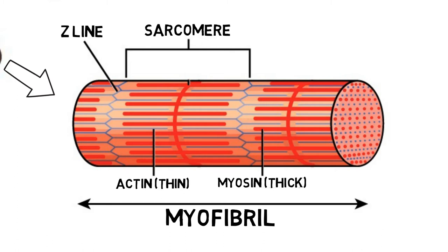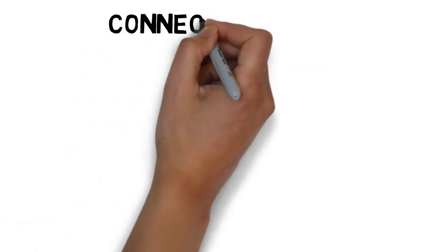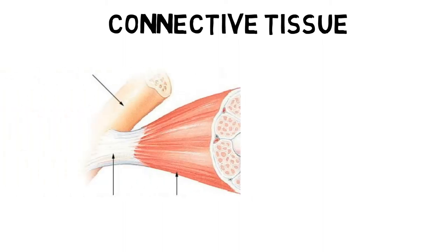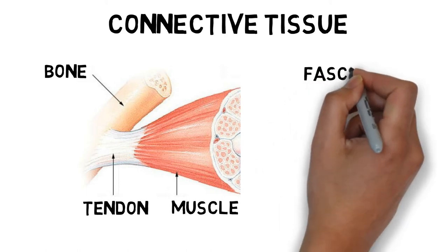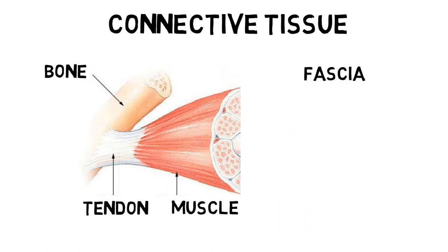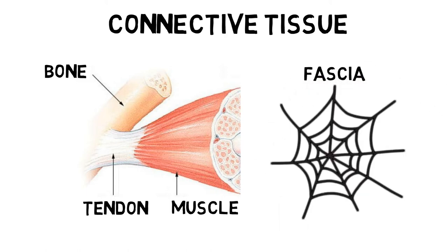The sliding filament theory deserves its own video — you can click on the link below to take a look. Connective tissues allow muscles to interact with the rest of the body. Muscles attach to bones via tendons to provide an anchor for muscles to produce force. Fascia are large areas of dense, thin fibrous tissue that surround a muscle or organ, a bit like a giant spider's web.